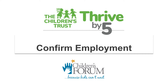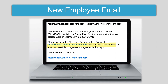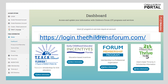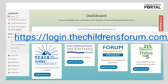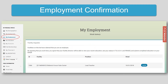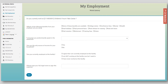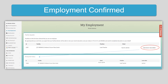Next, directors and required staff added to the roster need to confirm that they work for the child care program. This step only needs to be done one time for each employee added. Employees will receive an email prompting them to confirm their employment. If they do not already have a portal account, they will need to create one at this time. To confirm employment, directors and staff will log into their personal account. Once logged in, they will click on My Employment on the left-hand side and then click the Yes/No button to continue. Once all the questions are answered, click Save to confirm employment.